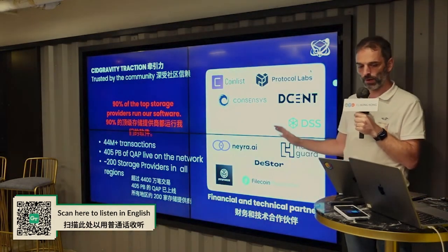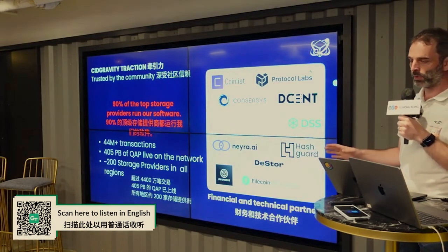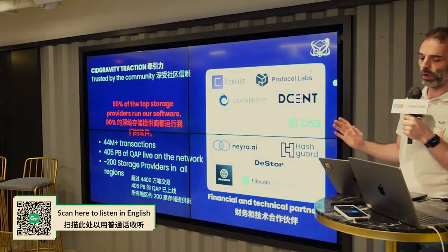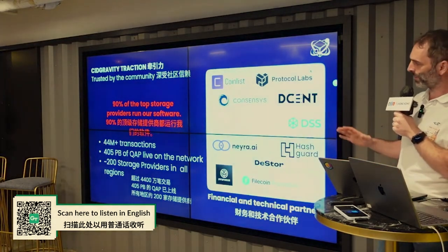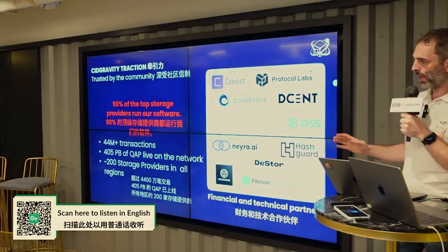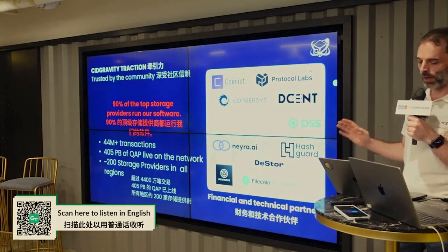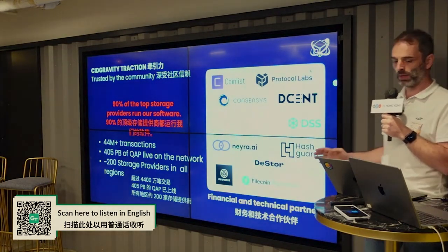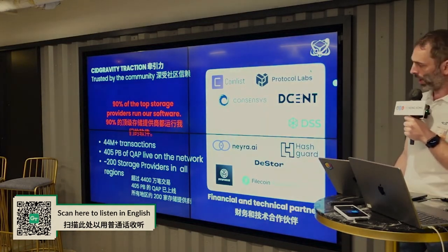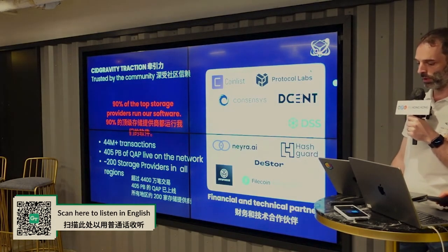A few figures to understand where we stand today: we have 90% of the top storage providers running our software — top storage providers that are actually accepting deals. We manage 44 million transactions on the network, and we have more than 400 petabytes of QAP currently live on the network and onboarding with CID Gravity. We have 200 storage providers using our product across all the different regions.